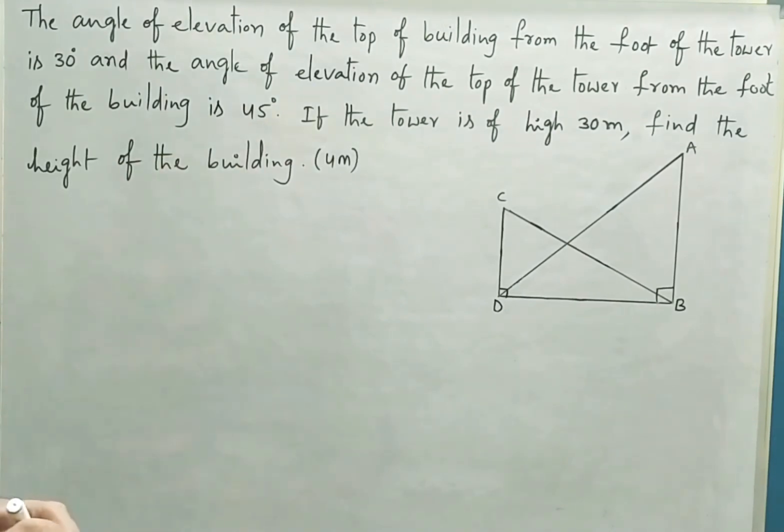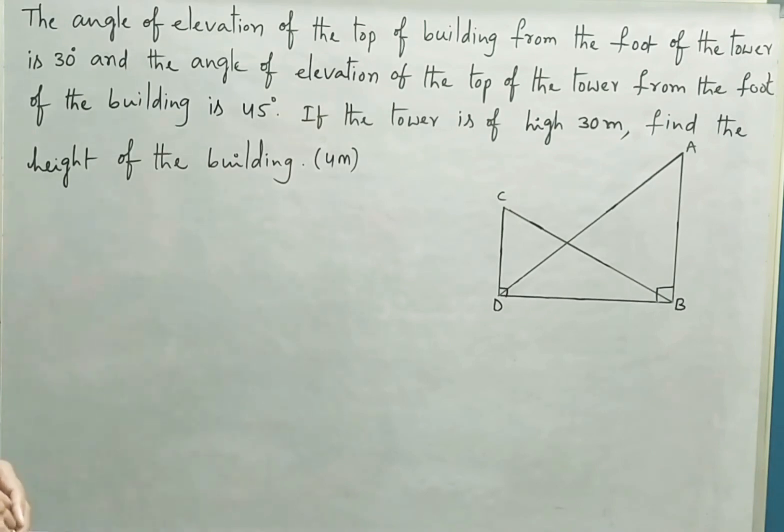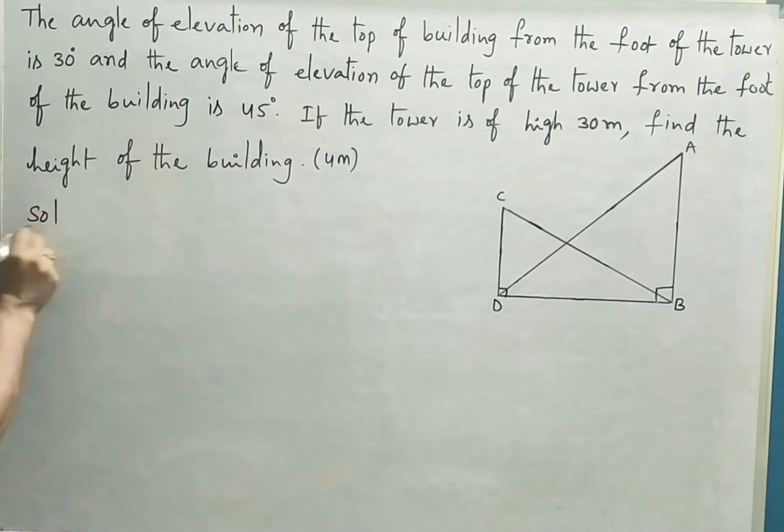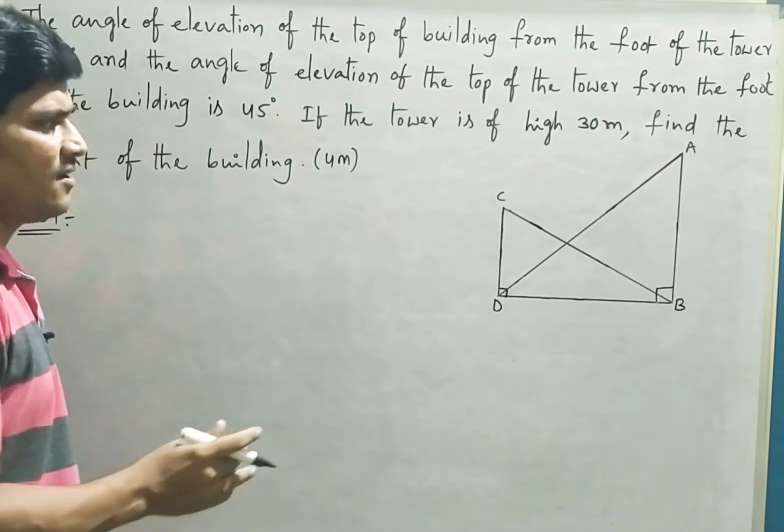If the tower is of height 30 meters, find the height of the building. For some types of questions we have to draw the figure first. Here I have already drawn the figure. Let us see what it represents.